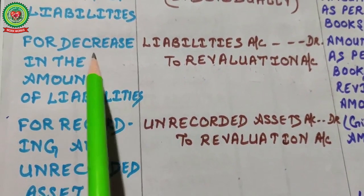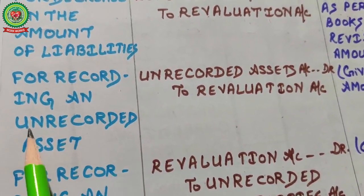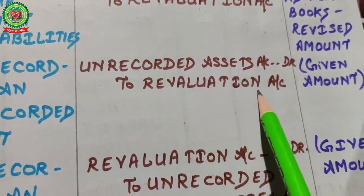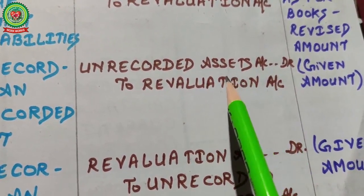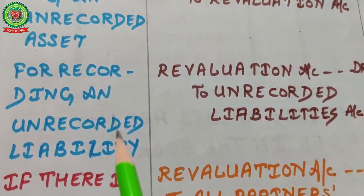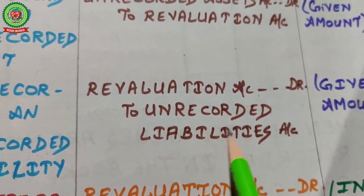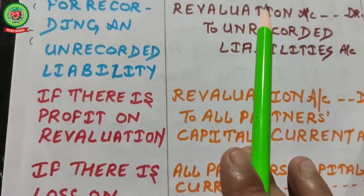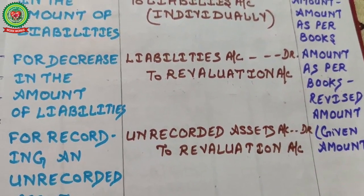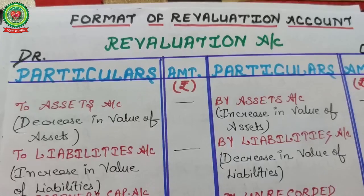For recording an unrecorded asset, the entry is: Asset Account debited, Revaluation Account credited — this increases profits. For recording an unrecorded liability, the entry is: Revaluation Account debited, Unrecorded Liability Account credited — given amount. These are all the basic journal entries needed to maintain the revaluation account.